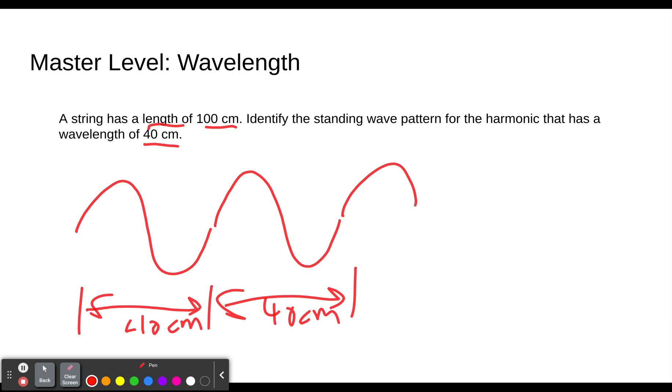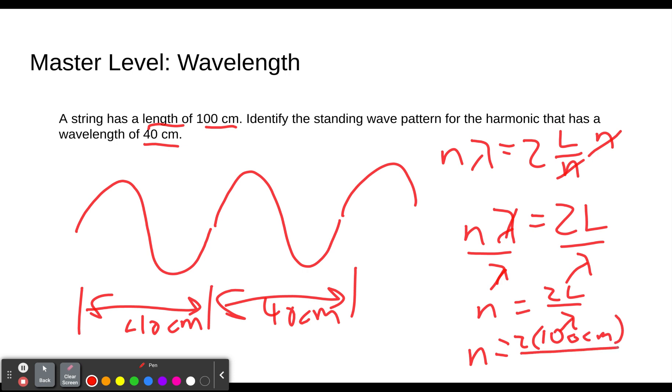If we want to use our formula, wavelength equals 2 times L over N. We're solving for N. N is the number, the harmonic number. So first thing we need to do is get N into the numerator. So we get N up into the numerator by multiplying both sides by N. Then we have N times the wavelength equals 2 times the length. And if we're trying to solve for N, we would divide both sides by the wavelength. And so we get N equals 2L over lambda. So N equals 2 times 100 centimeters divided by the wavelength, which is 40 centimeters. So we have 200 divided by 40, which is 5.